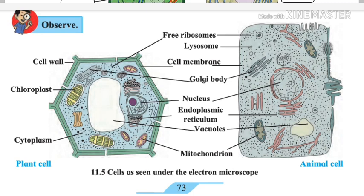Let's discuss which components are present in each cell type. Cell membrane is present in both cells. Cell wall is present in plant cell and absent in animal cell. Vacuoles are present in both cells. Golgi complex is present in both cells. Mitochondria is present in both cells — it is the powerhouse of the cell, which provides energy to the cell.